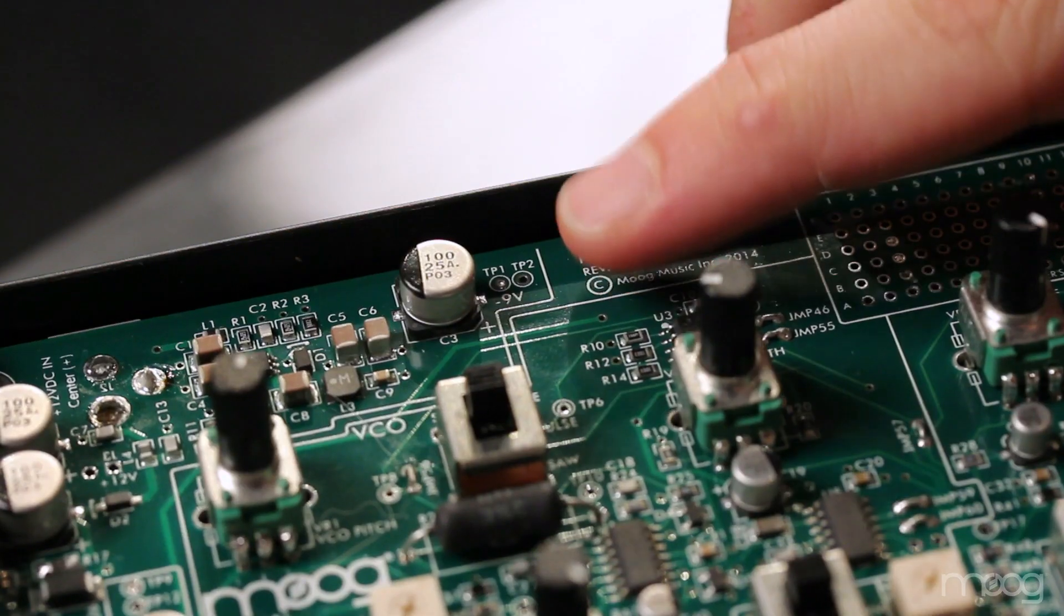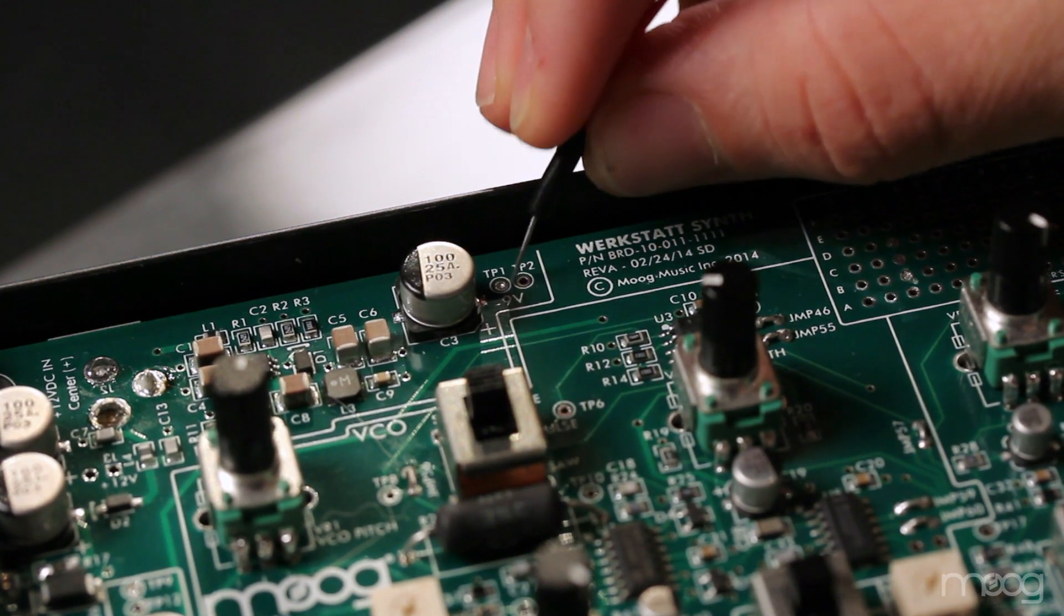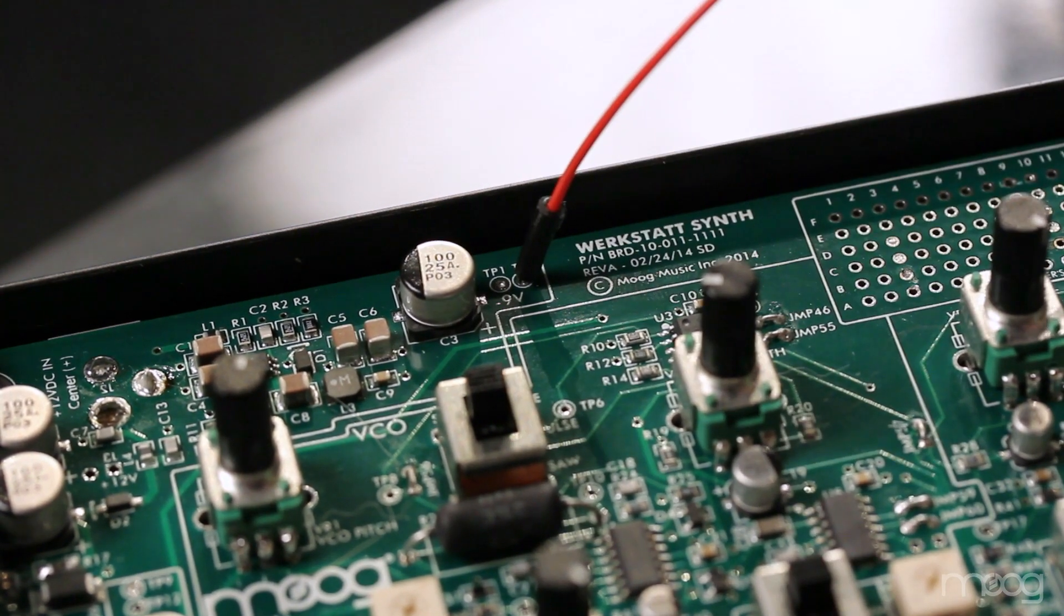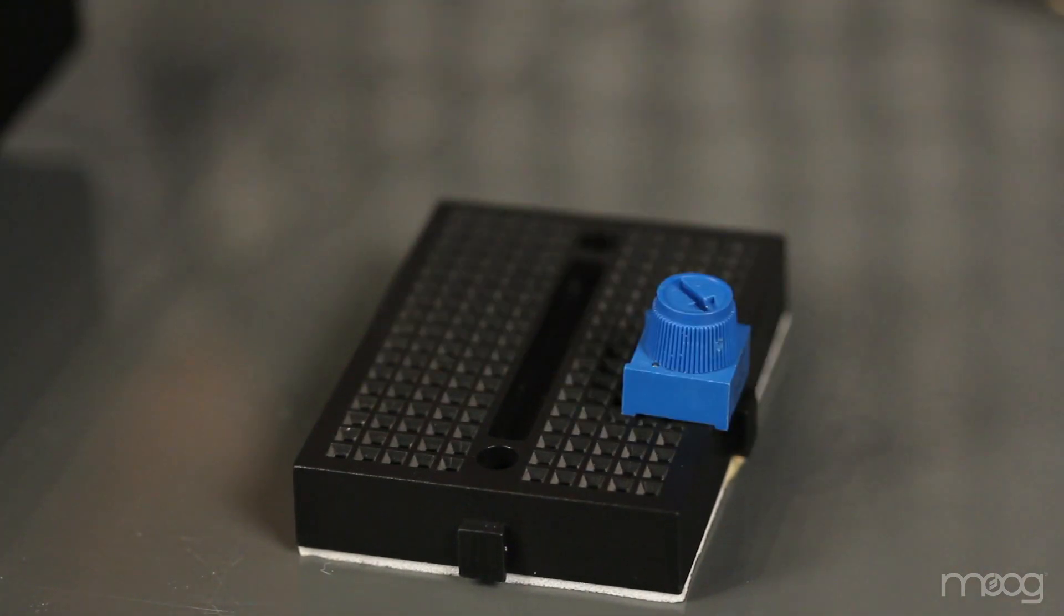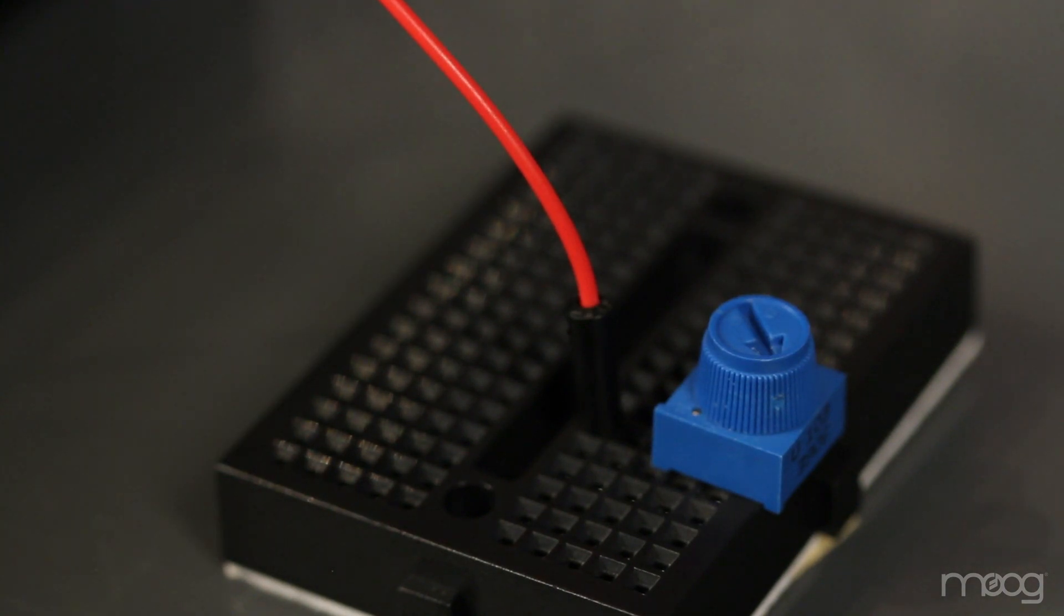For the volume control, we'll need to access the negative 9 voltage taps on the Werkstatt PCB. These are located at tap 1 and 2 on your board. Take a jumper cable and feed it through either tap 1 or 2. From there, take one of your 10K potentiometers and place it into your breadboard. Run the negative 9 voltage into one of the far pins of the potentiometer.